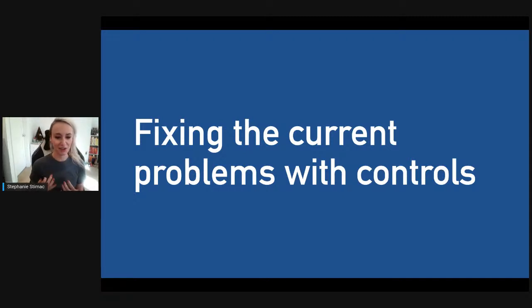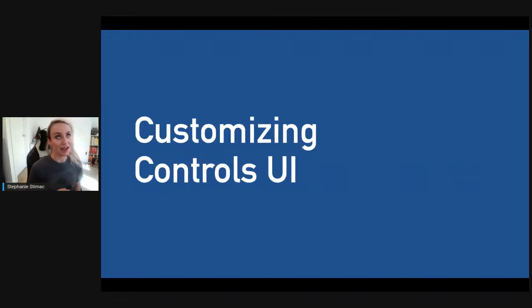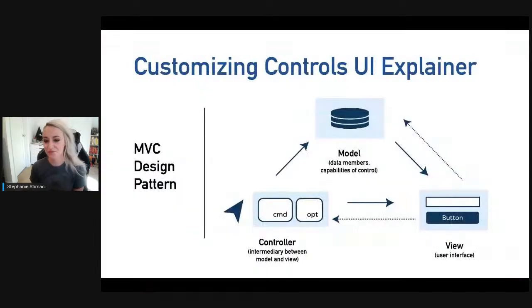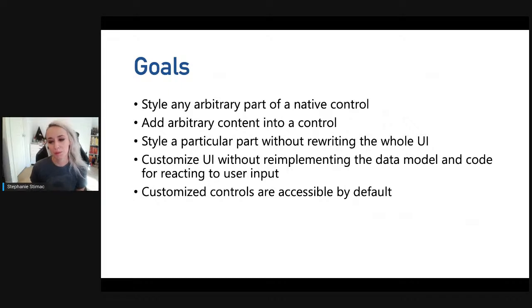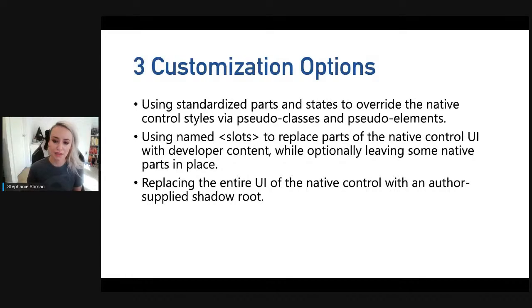Now let's talk about fixing current problems with controls — the stuff I'm most excited about. In August 2020, an explainer with proposed solutions for enabling customization of controls UI was released by the Chrome, Edge, and Open UI teams. The proposal for form controls uses the MVC design pattern, where the form control is made up of three distinct parts: a model, a view, and a controller. The goals revolve around enabling as much customization as possible while reducing overhead for the developer, with three different solutions offering a range of flexibility.